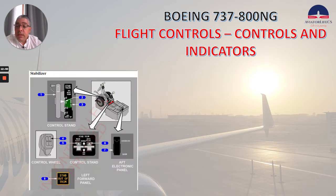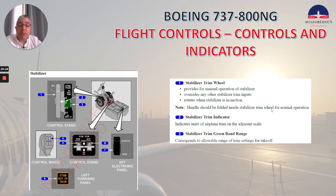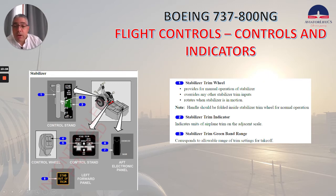The stabilizer. Number 1, we have the stabilizer trim wheel, which provides for manual operation of the stabilizer, overrides any other stabilizer trim inputs, and rotates when the stabilizer is in motion. Note: the handle should be folded inside the stabilizer trim wheel for normal operations — otherwise it could cause damage to your knees or hands. Number 2, we have the stabilizer trim indicator, which indicates units of airplane trim on the adjacent scale. Number 3, the stabilizer trim green band range corresponds to the allowable range of trim settings for takeoff.